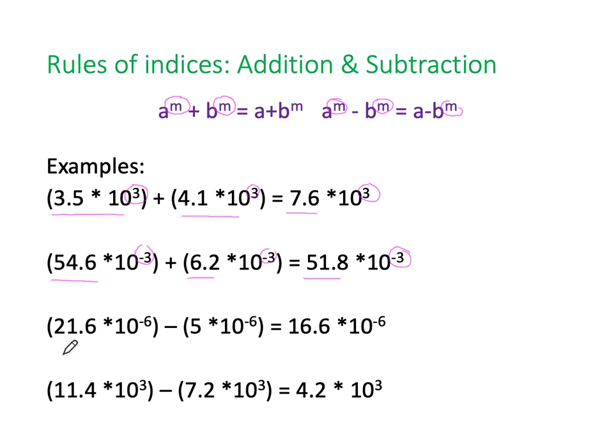And of course, we can do the same here, 21.6 minus 5 is 16.6 times 10 to the minus 6. Because they're both the same. And finally, our 11.4 times 10 to the 3 minus 7.2 times 10 to the 3 is 4.2 and again times 10 to the 3. Because we were using times 10 to the 3 all the way through. So with addition and subtraction, just got to remember, you need to have the same power for each of the numbers.